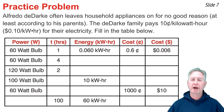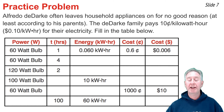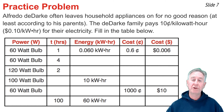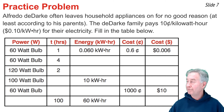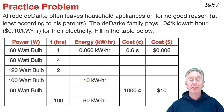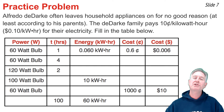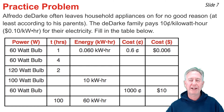Here's a practice problem. Alfredo DeDark often leaves his room lights on for no good reason, at least according to his parents. The DeDark family pays 10 cents per kilowatt-hour for their electrical usage. Use this information to fill in the table. I recommend you pause the video, try the problem, then press play to see the answers and solutions.